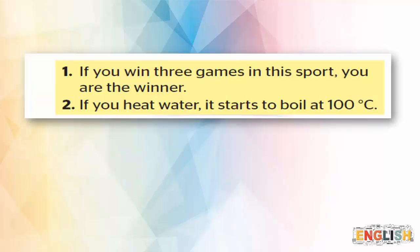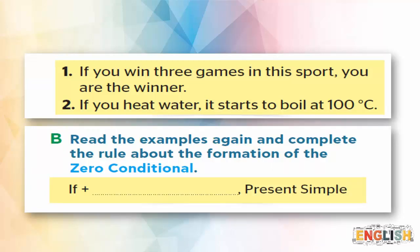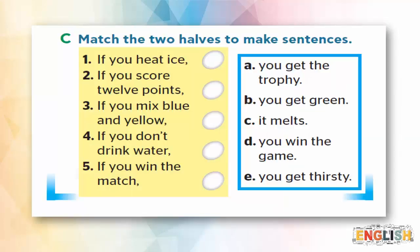Time to practice. Read these two sentences and complete the rule about the formation of the zero conditional. Sentence one: 'If you win three games in this sport, you are the winner.' Sentence two: 'If you heat water, it starts to boil at 100 degrees Celsius.' I'll give you five seconds. The answer is: if + present simple, comma, present simple. The zero conditional uses present simple only.